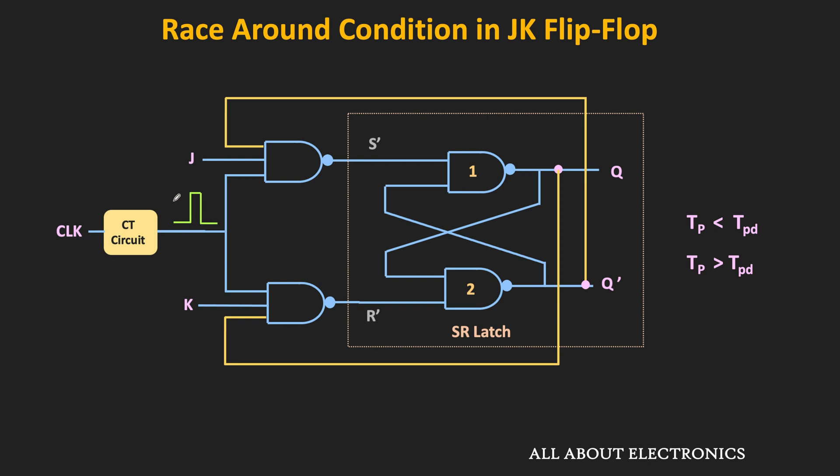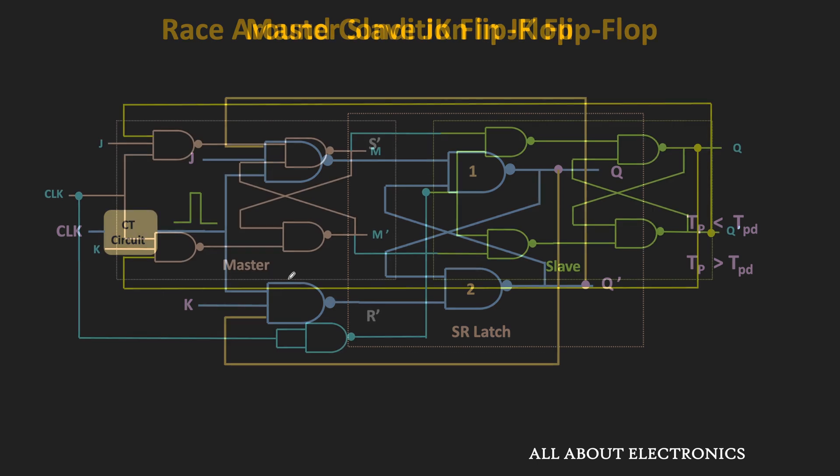That means the duration of the narrow pulse needs to be optimum. In other flip flops we may not encounter such issues, but in the case of the JK Flip Flop, because of the feedback from the output to the input side, we may encounter the race-around condition. This issue can be resolved with the help of the master-slave flip flop. So let us see the design and working of the master-slave JK Flip Flop.